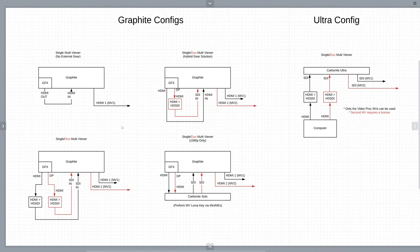Now that we know the prerequisites, let's diagram this all out. Looking at these diagrams, I've put together every possible scenario. Under the Graphite configuration, there are four possible outcomes. The one we're focusing on today is a single multi-viewer with no external gear. Essentially, the graphics card in the Graphite unit outputs its HDMI feed, and we loop it back into the Graphite card's HDMI input. The HDMI out of the Graphite card then supplies our multi-viewer with our audio meters attached.